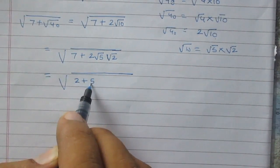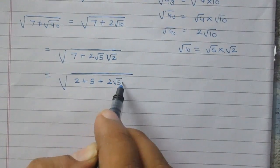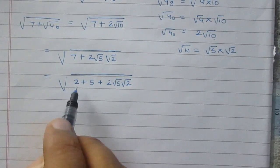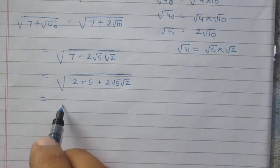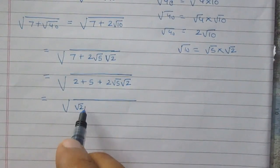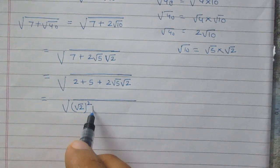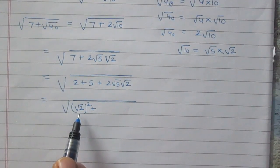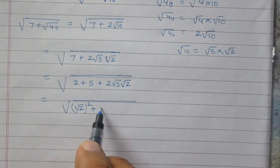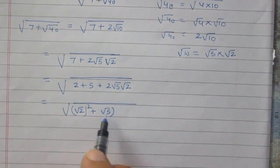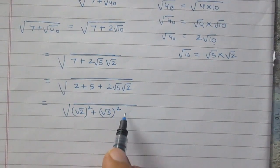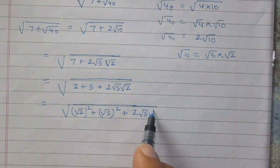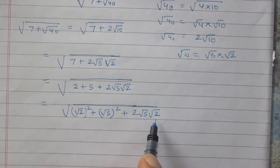So it is square root of 2 plus 5 plus 2 times square root 5 and square root 2. Now 2 can be written as square root 2 whole squared, because the square of a square root of a number is the number itself. Similarly, 5 can be written as square root of 5 whole squared. Then the remaining term is 2 times square root 5 and square root 2.